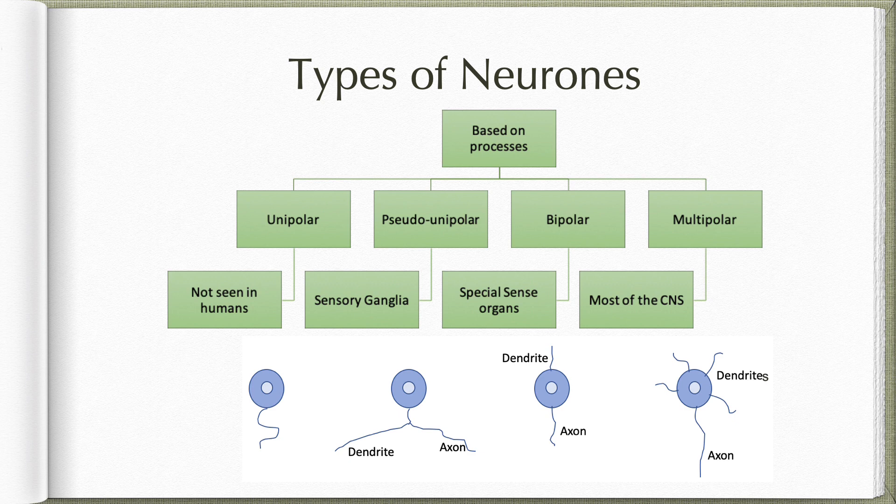Bipolar neurons are spindle-shaped neurons having one dendrite at one pole and an axon at the opposite pole. Such cells are seen in the special sense organs. The most abundant type of neurons are the multipolar neurons, having one axon and multiple dendrites.